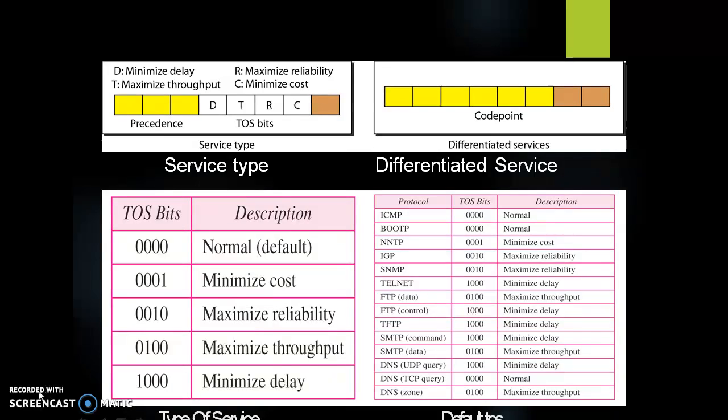First, when the 3 rightmost bits are 0s, the 3 leftmost bits are interpreted the same as the precedence bits in the service type interpretation. In other words, it is compatible with the old interpretation. Second, when the 3 rightmost bits are not all 0s, the 6 bits define 64 services based on the priority assignment by the Internet or local authorities. According to the table, the first category is assigned by the Internet authorities, the second category can be used by local authorities, and the third category is temporary and can be used for experimental purposes.